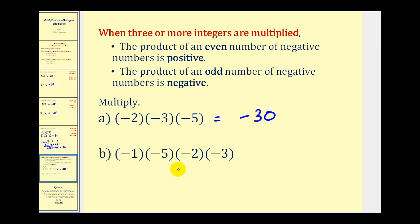On this last example, notice we have one, two, three, four negatives being multiplied together. Well, four is even, so our product will be positive. And now that we know our answer will be positive, we can just multiply one times five, which is five, times two, which is ten, times three, which would be thirty.